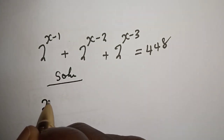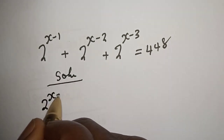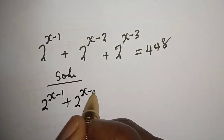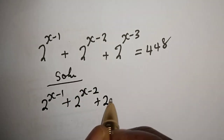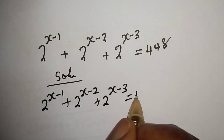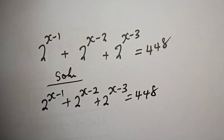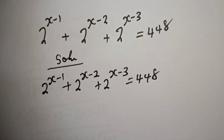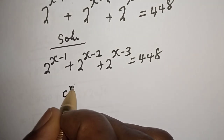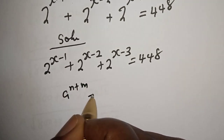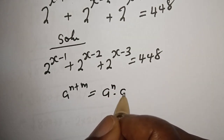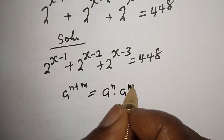We have 2 raised to power x minus 1, plus 2 raised to power x minus 2, plus 2 raised to power x minus 3, is equal to 448. Take note of this exponential rule: if you have a raised to power n plus m, this is equal to a raised to power n multiplied by a raised to power m.